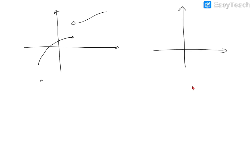For another example, this is non-differentiable at the point a. If the graph has some sharpness, a sharp corner, again it is not differentiable. There is a sharpness here, so again this is non-differentiable at x equals a.